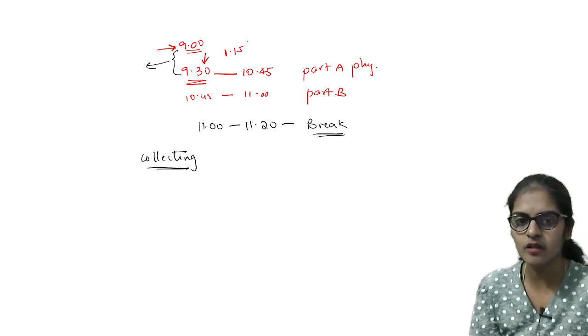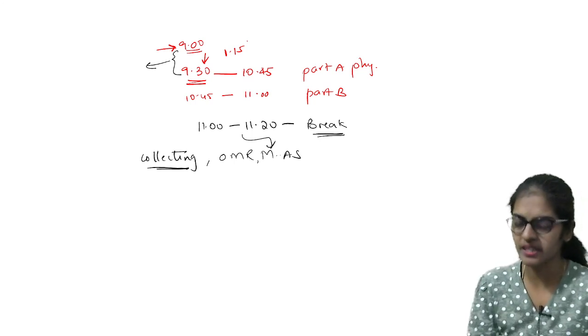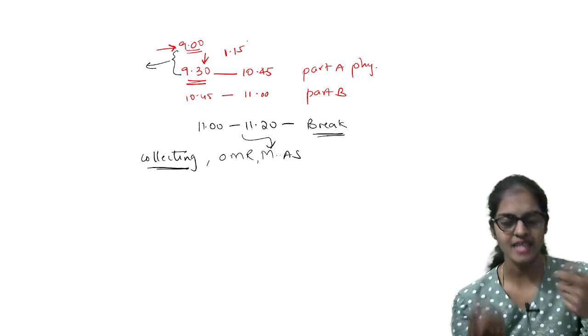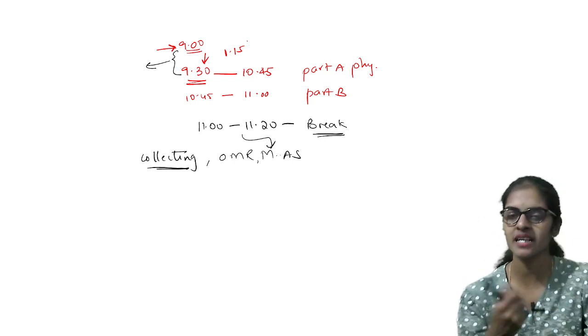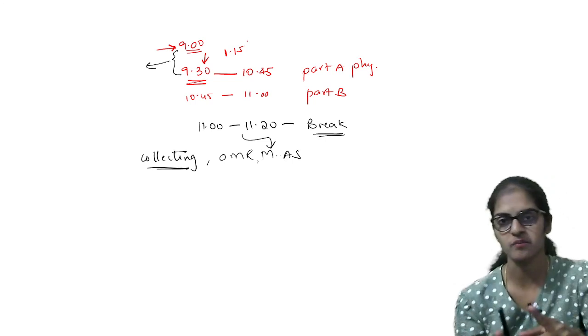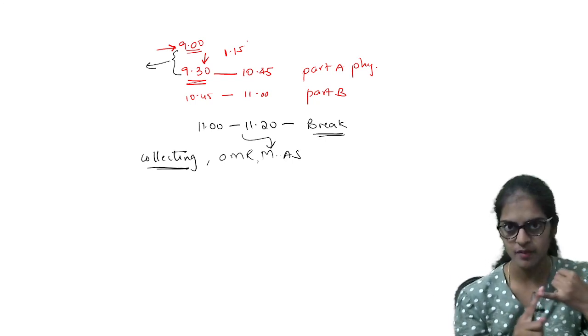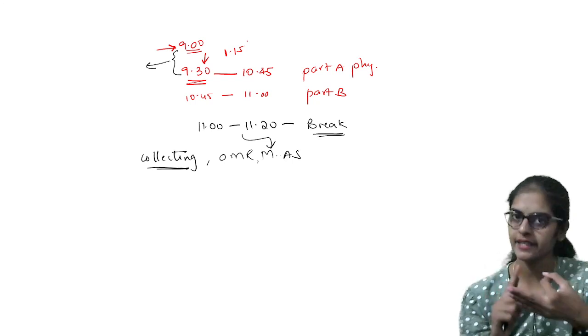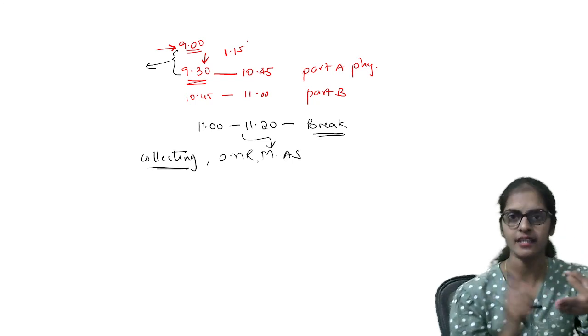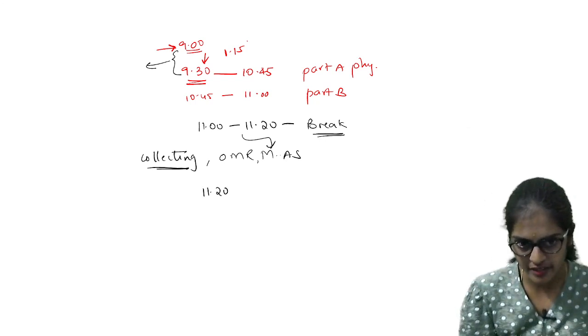They gave you OMR and main answer sheet from 9 to 9:30. The same way, they will give you OMR and main answer sheet in this 20 minutes. You will fill the OMR, staple the OMR, attach the OMR and the main answer sheet, and sticker it. This 20 minutes is for all of them. They will collect your physics papers first. After collecting the physics papers, they will give you new OMRs for biology and new main answer sheet for biology. Again, you will fill the OMR and attach it to the main answer sheet.